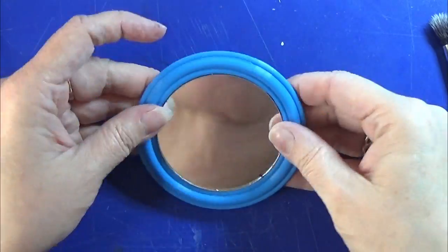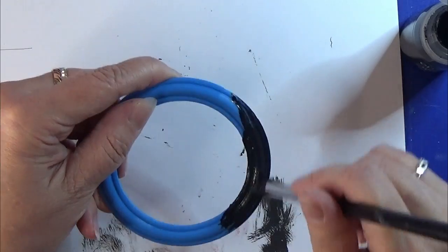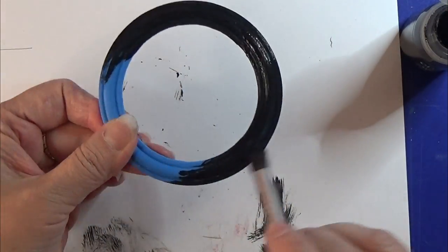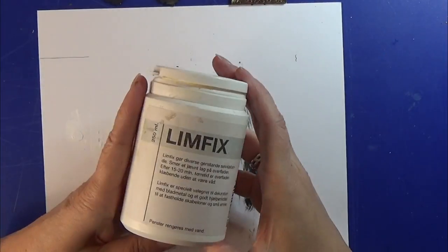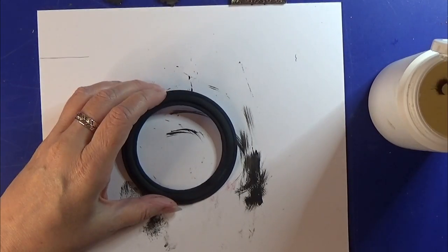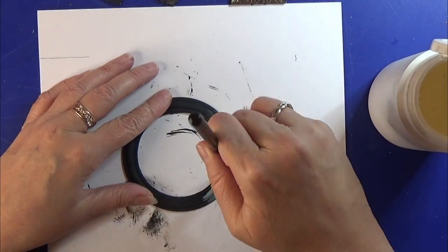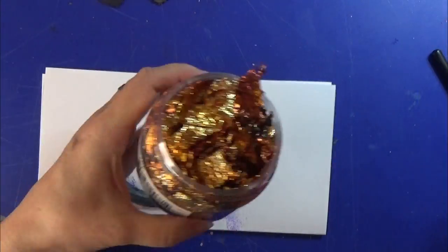My husband found this little mirror for me and I 3D printed a frame for it, painted it all black. Then I am going to use my glue fix and some fake gold leaf to place on this frame to make it really pop.